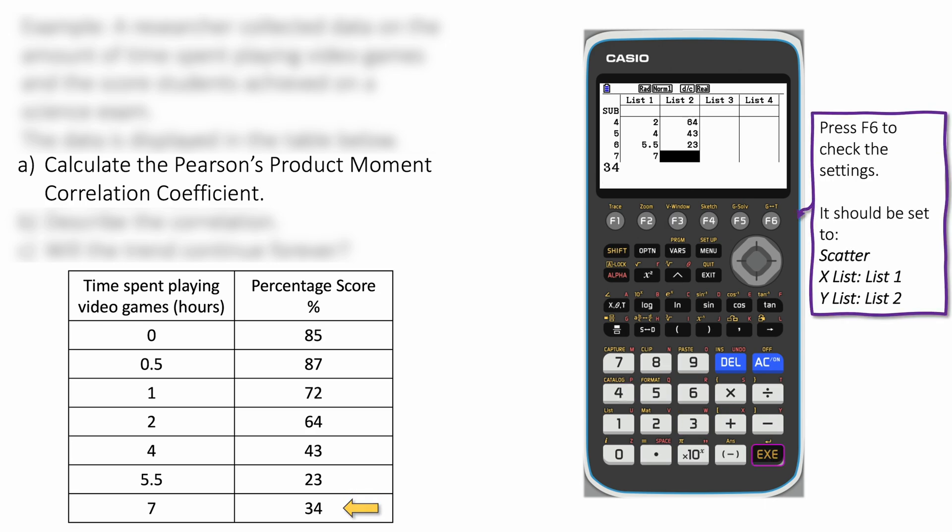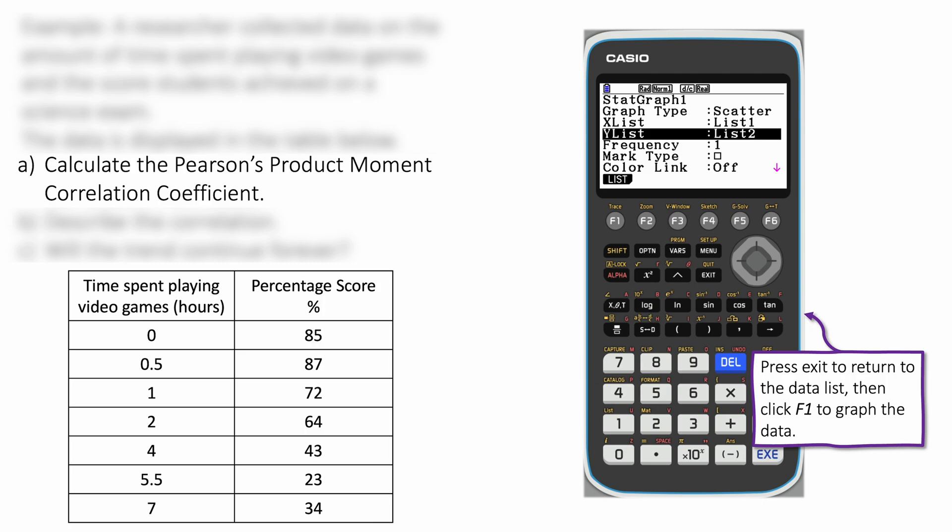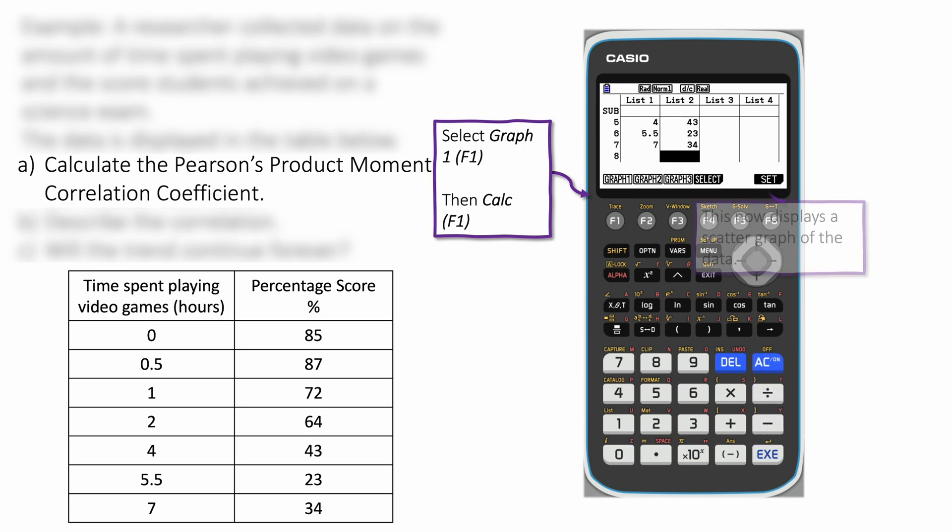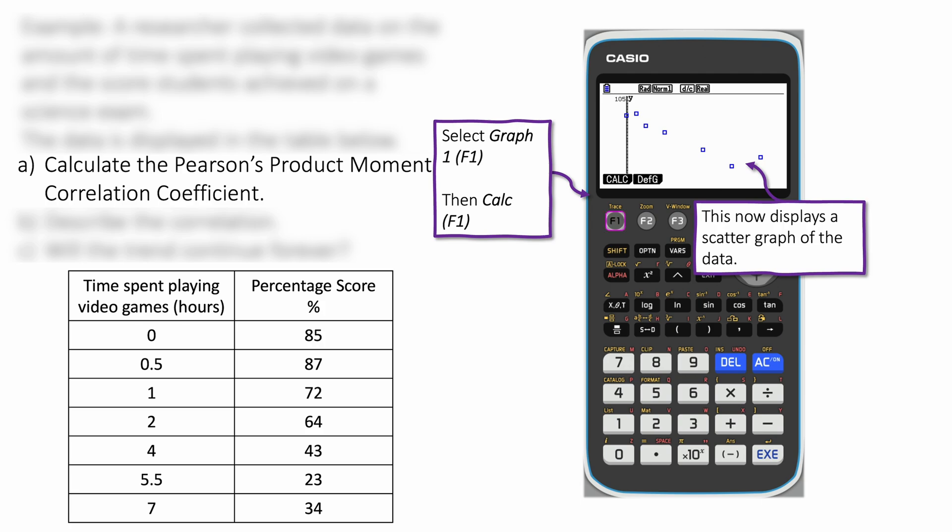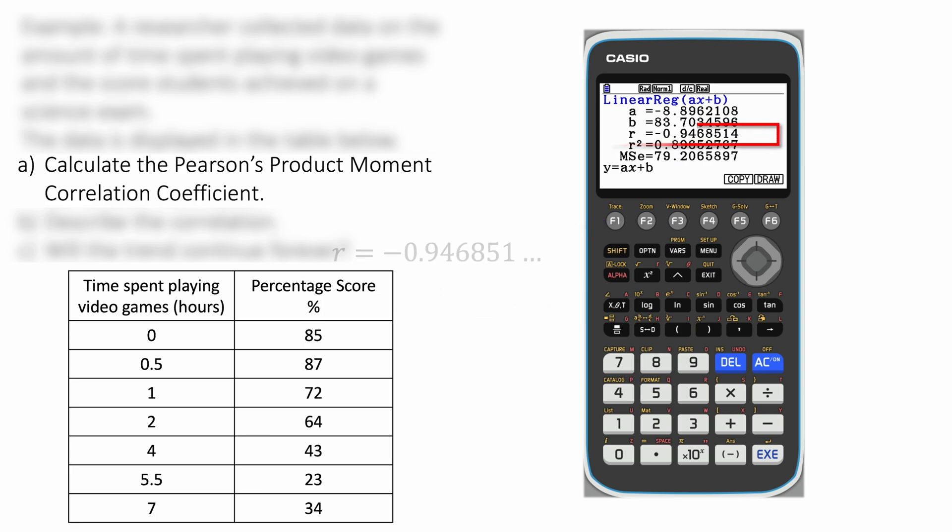Now we're going to choose F6 twice to check our settings. The graph type should be scatter, our x list should be list 1, and our y list should be list 2. When you're happy with that, click exit and then go to F1 for graph. Click F1 again, and now we're going to click x by clicking F2 and then F1 for ax plus b.